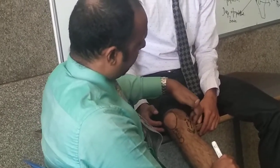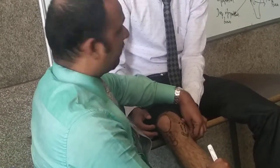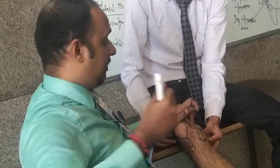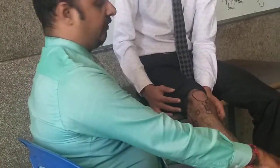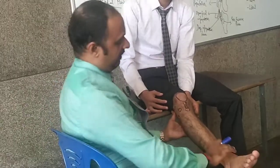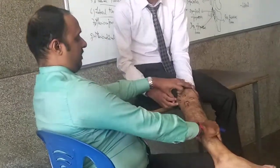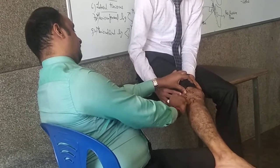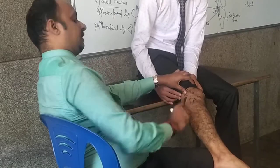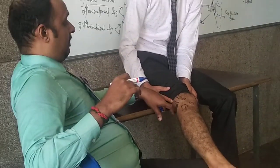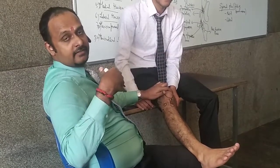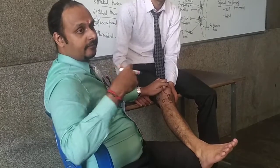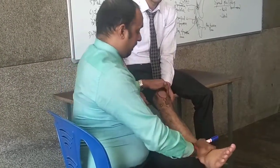Semimembranosus first; semitendinosus is more rope-like or stick-like. After that, the gastrocnemius muscle has medial and lateral heads — they originate from the distal femur, so they are also flexors of the knee. Deeper to the gastrocnemius, we have the obliquely-directed popliteus in the popliteal fossa. It attaches from the lateral condyle of the femur to the posterior medial condyle of the tibia. The popliteus is known as the unlocking muscle — it internally rotates the tibia so that the knee will flex. Unlocking is flexion, locking is extension.